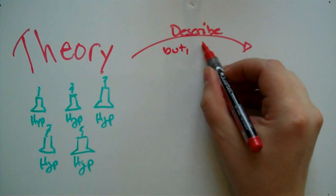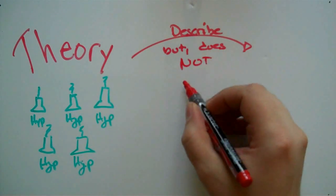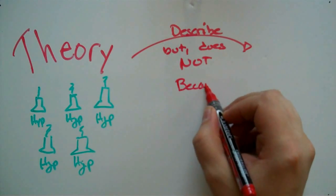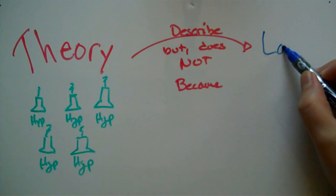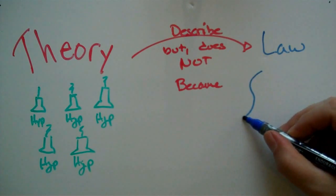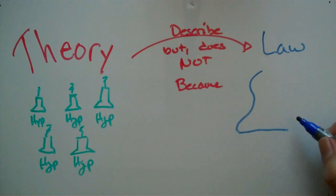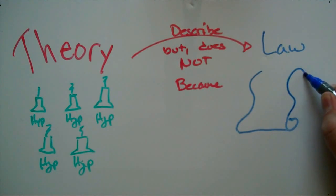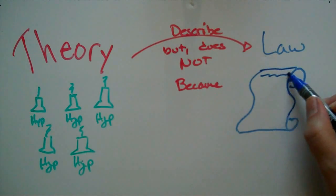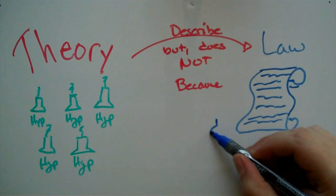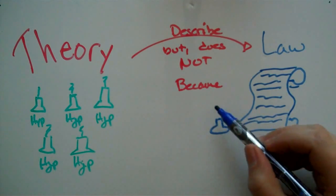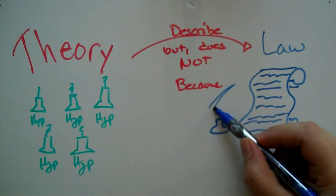But it does not become a law. A law is what the theory is describing. A law looks at the world and says, hey, everybody accepts that gravity works. Nobody is going to say that gravity is not pulling you down towards the center of the earth. But you need to develop a theory of gravity in order to describe and understand the properties of gravity.